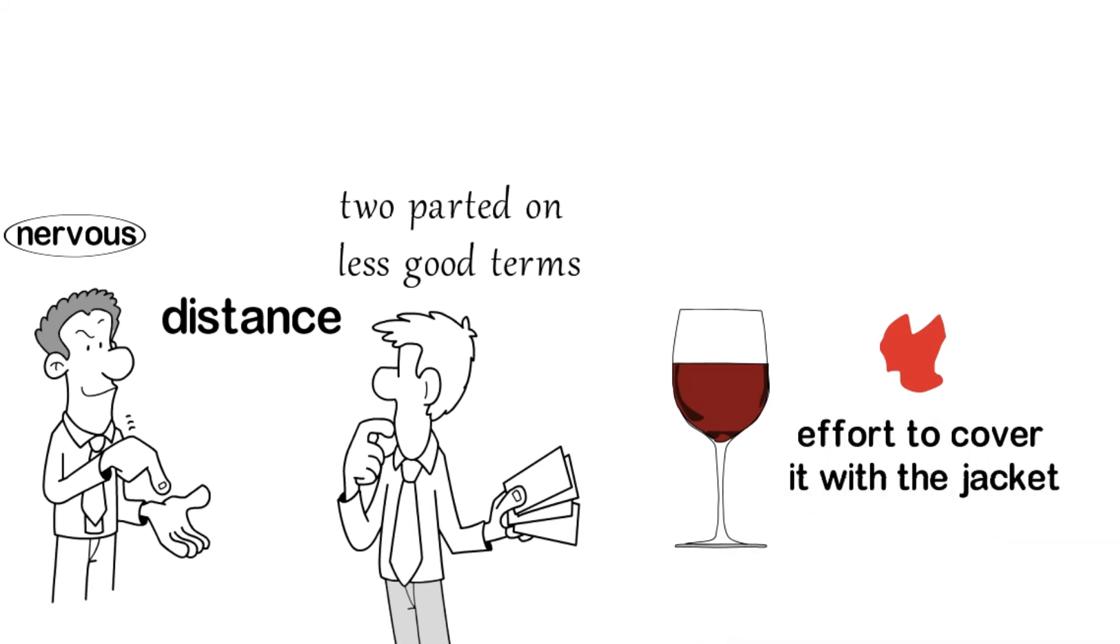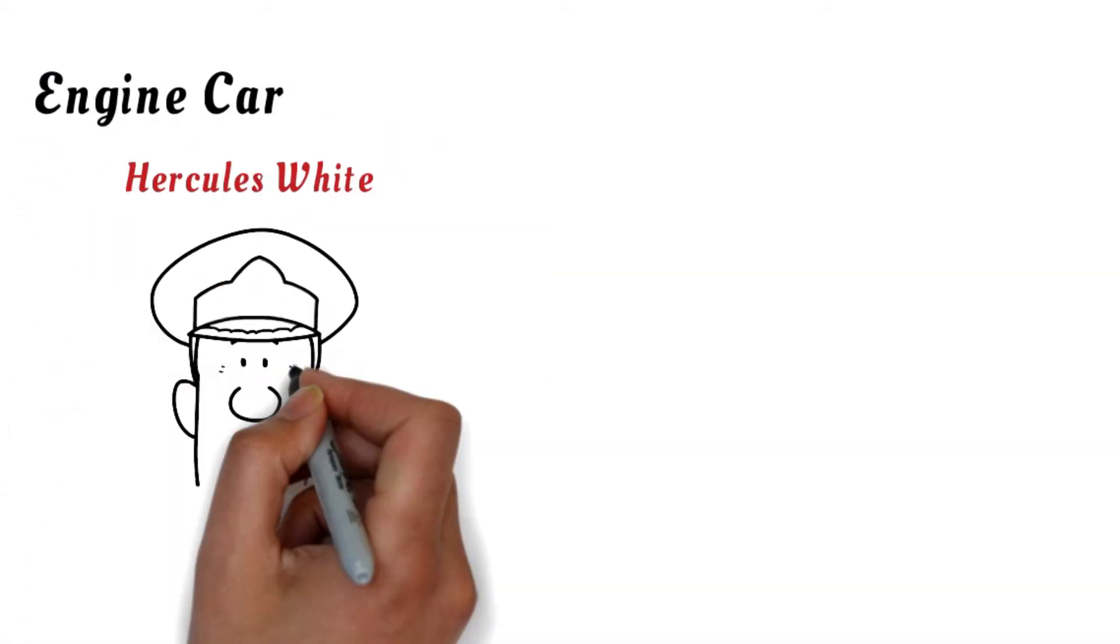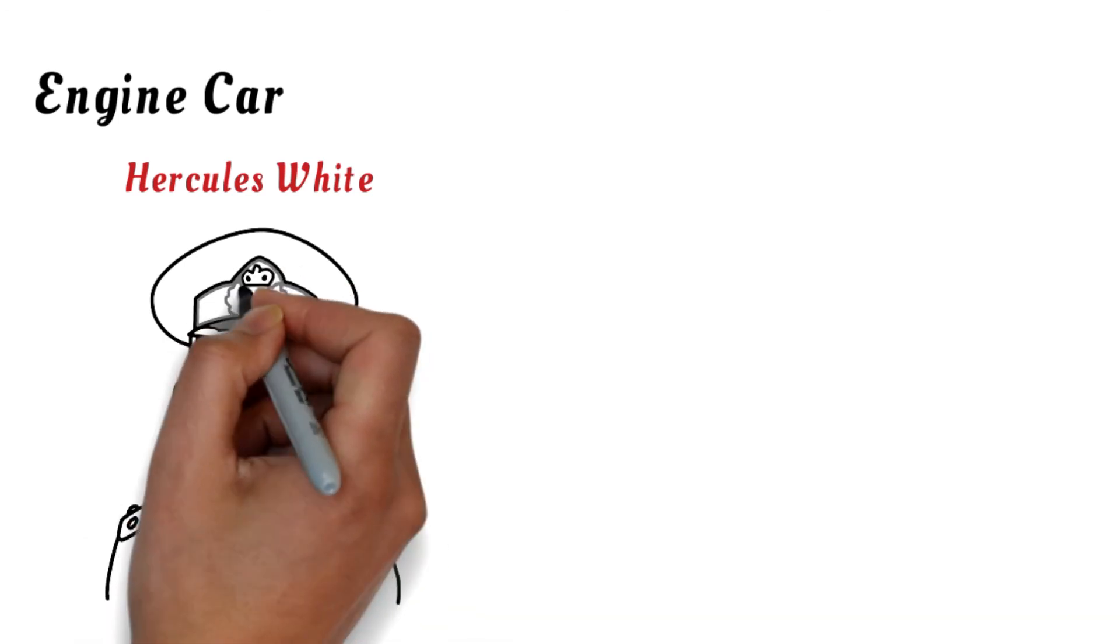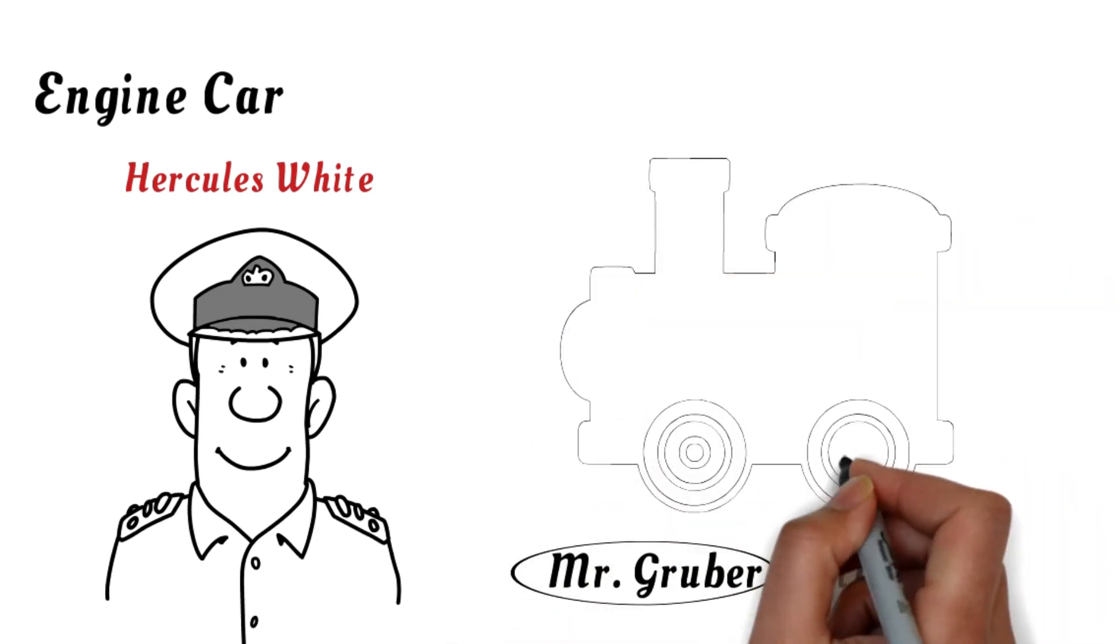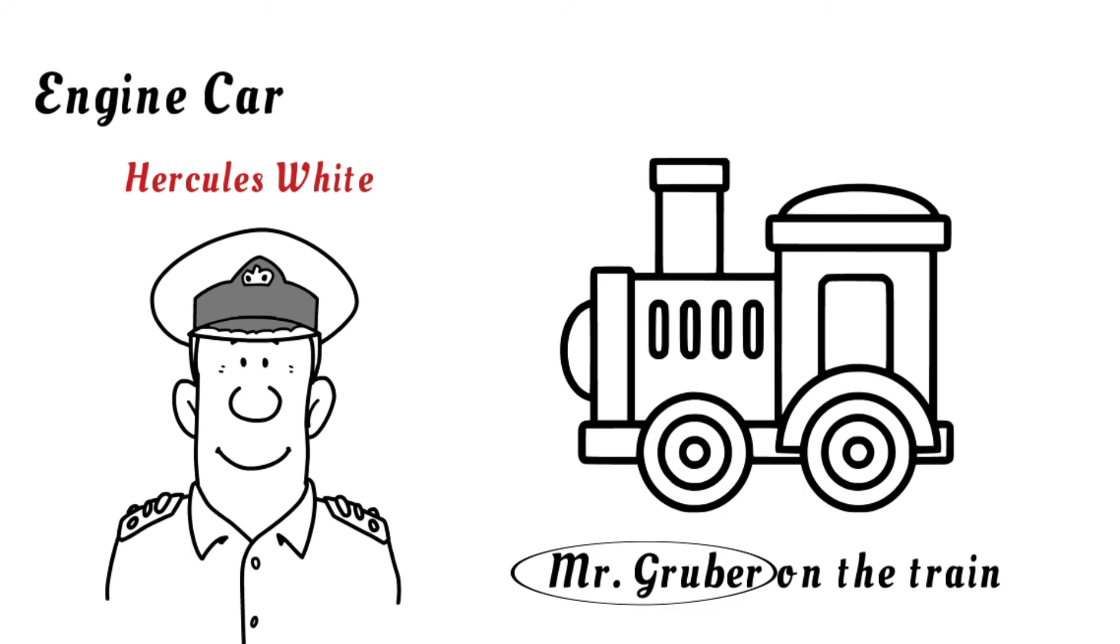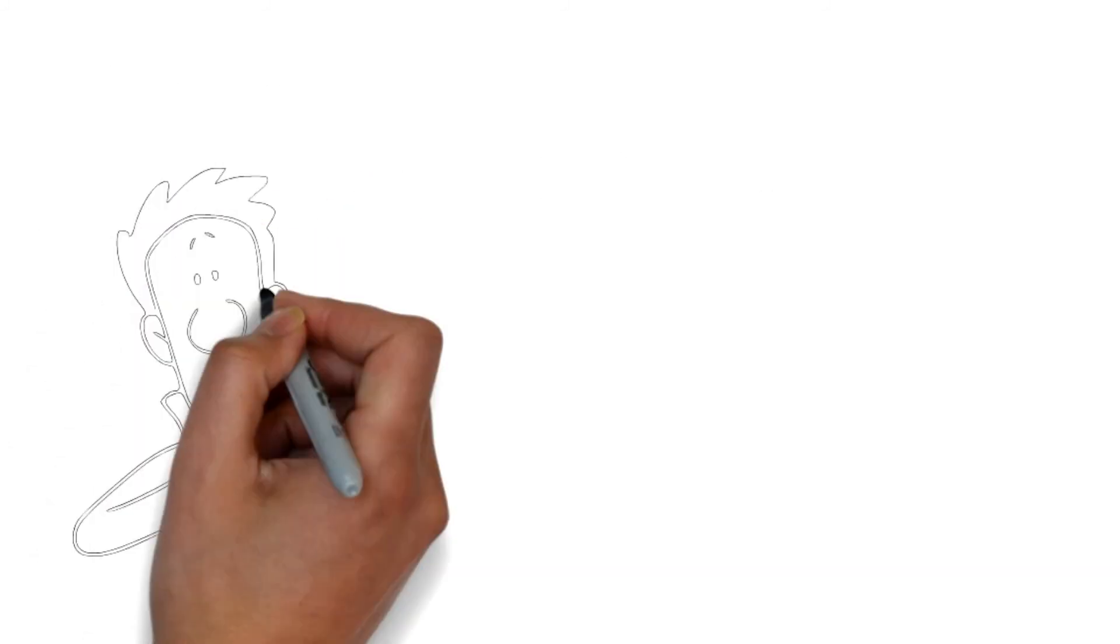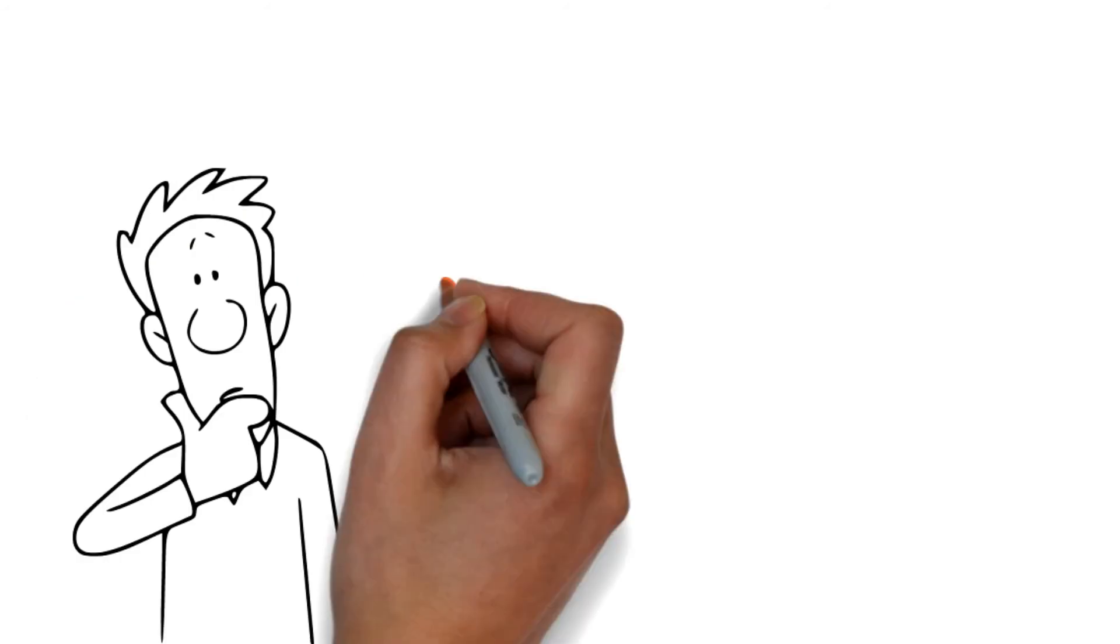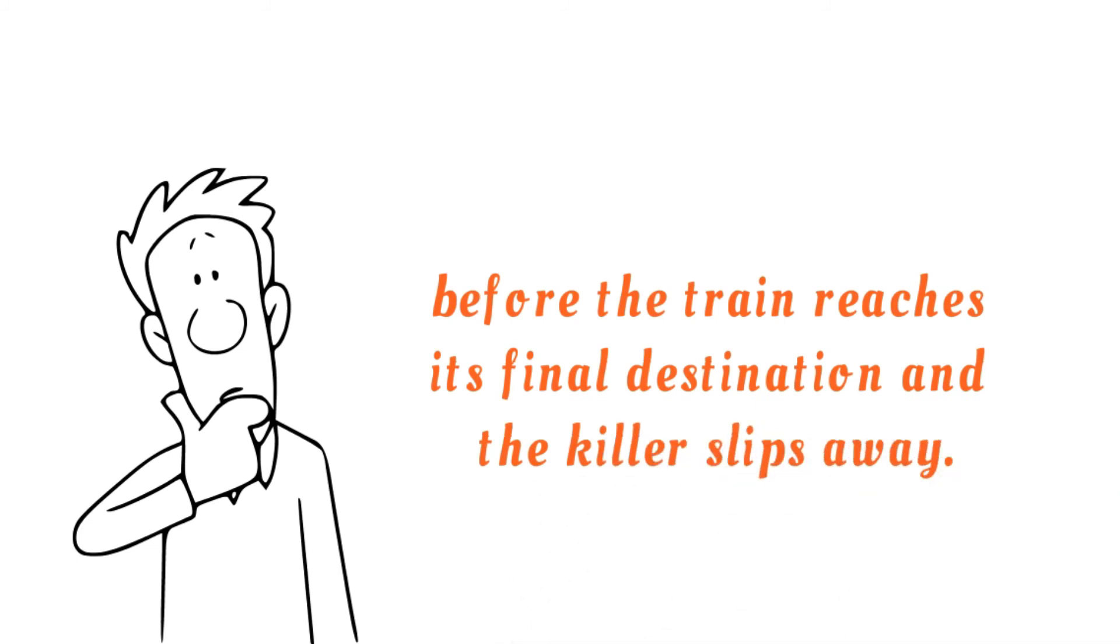Finally, in the engine car, you'll meet Hercules White, the engineer driving the train. He says that he frequently sees Mr. Gruber on the train but he never had a memorable conversation with him. He claims to be polite to each guest he meets but he doesn't leave the engine room much, so there is no reason for him to interact with guests. It looks like you're going to have to pull out all the stops to catch this killer before the train reaches its final destination and the killer slips away.